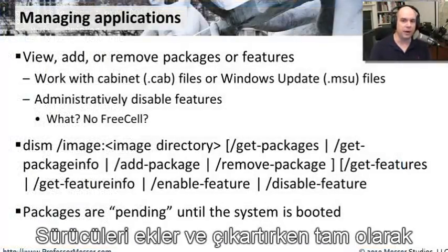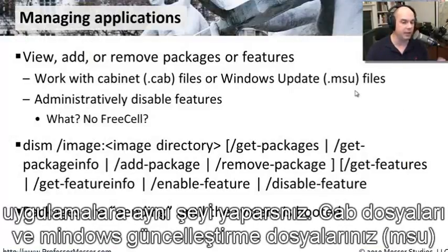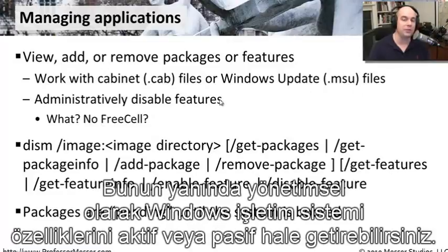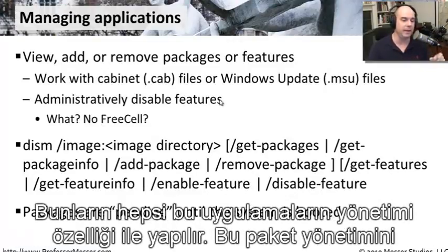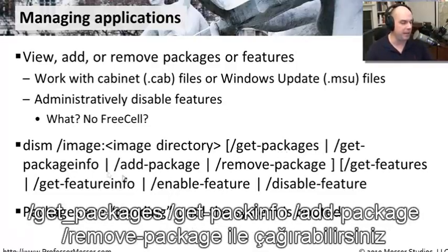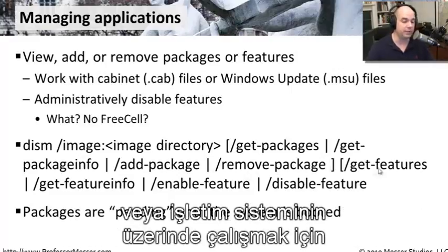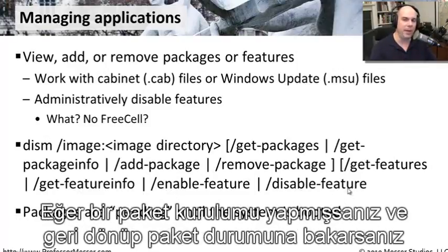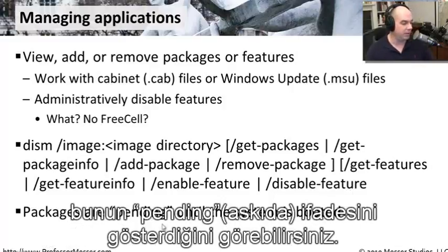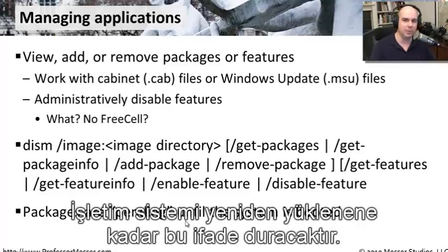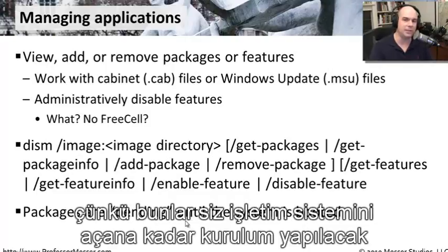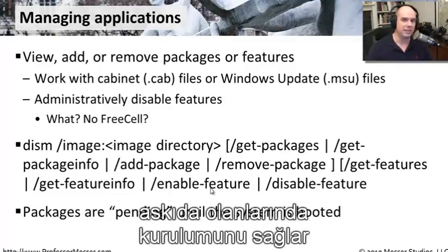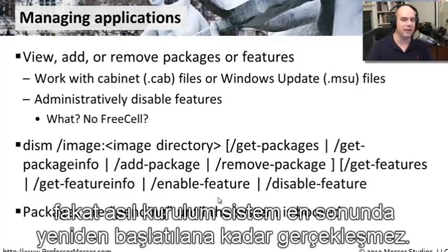Just as you can install and remove drivers, you can do exactly the same thing to applications. Cabinet files and Windows update files can be manipulated using these DISM commands. You can also administratively enable or disable features of the Windows operating system — all from the ability to manage applications, which we call package management. You can get package, get package info, add a package, remove a package, or work with OS features using get-features, get-feature-info, enable-feature, and disable-feature. Note: if you install a package and check its status, it may say pending — that's normal, because packages can't fully install until the system boots.